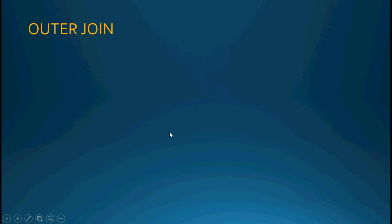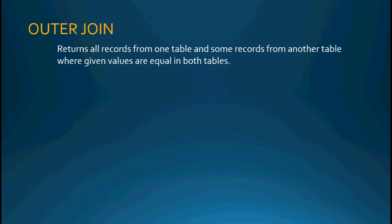There is also an outer join. An outer join is a little different from an inner join because it returns all records from one table — not just some of the records, not just the records where everything is equal, but actually all of the records from one table, and some records from another table where given values are equal in both tables. We'll see it in action and it'll make more sense when you can see the difference in results from an inner join versus an outer join.